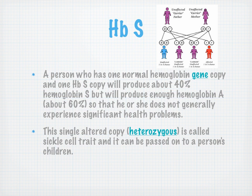A person with one normal hemoglobin gene and one hemoglobin S copy produces about 40% hemoglobin S, but produces enough normal hemoglobin A that you generally don't see significant health problems unless there are times of stress. That single altered copy — heterozygous — is called sickle cell trait. Where it can be problematic is that it can be passed on to children. With two unaffected carrier parents, one in four children will actually be affected, not just carriers.